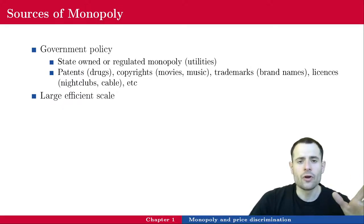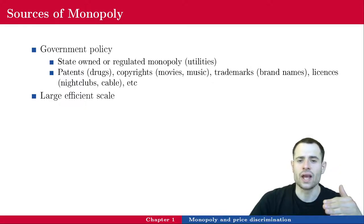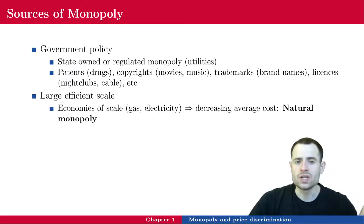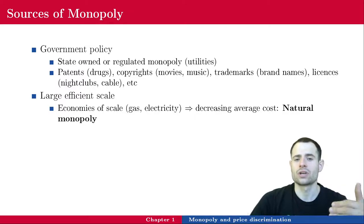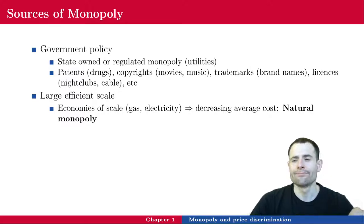It is the same with trademarks — if you start a firm, you need to declare the name at the government level. Licenses such as nightclubs and cable work similarly. Sometimes, firms end up in a monopoly because of a large efficient scale. Some industries are characterized by economies of scale, in particular gas, electricity, and water.